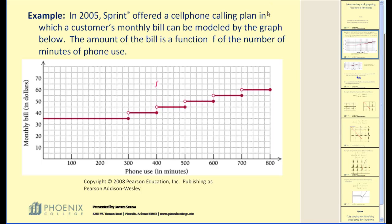In 2005, Sprint offered a cell phone calling plan in which a customer's monthly bill can be modeled by the graph below. The amount of the bill is a function f of the number of minutes of phone use. Down here on the x-axis we have the number of minutes used per month, and on the y-axis we have the monthly bill in dollars.